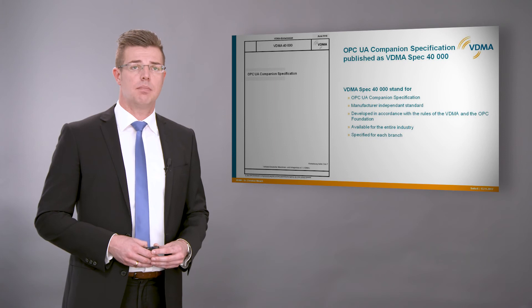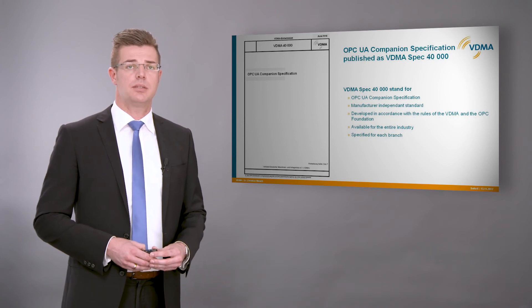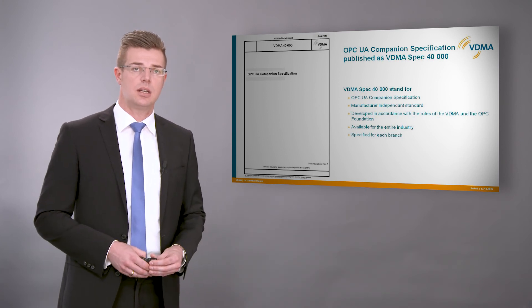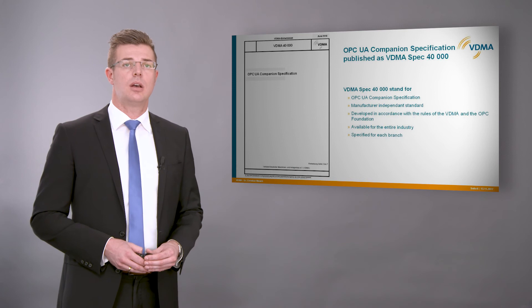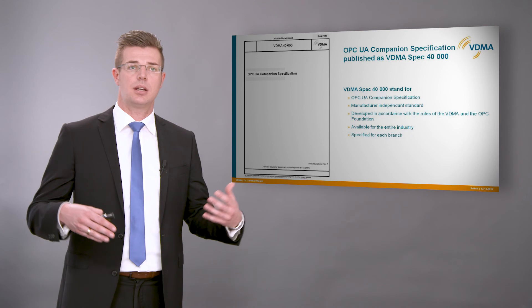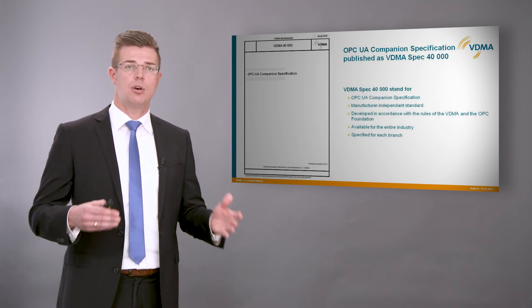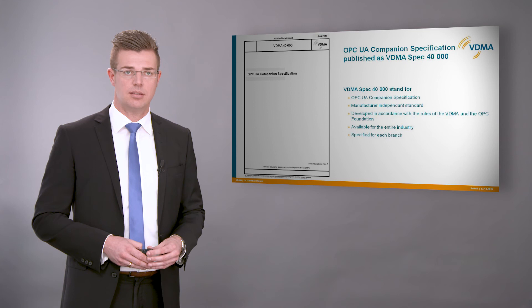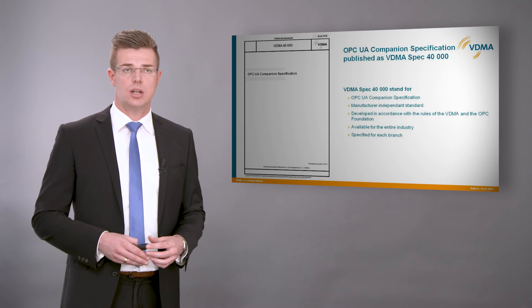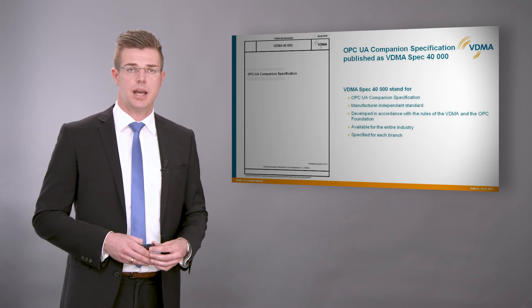The VDMA is publishing the OPC UA companion specifications in the form of VDMA specs of the 40,000 series. That means the VDMA specs of the 40,000 series stand for the mechanical engineering industry and describe the OPC UA companion specifications in a manufacturer independent way. They are developed in accordance with the rules of the VDMA and the OPC Foundation, and are available for the entire industry but also described specific for each branch.